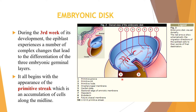The red arrows show the schematic migration directions of the epiblast cells to their points of final destination. The numbered labels identify the different parts: number one is the primitive groove, number two is the primitive pit, number three is the primitive node, number four is the oropharyngeal membrane, five is the carcel plate, six is the sectional edge of the amniotic membrane, seven is the mesoderm, eight is the endoderm, and nine is the future cloacal membrane.